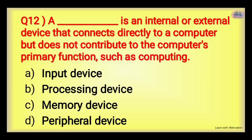Next: Dash is an internal or external device that connects directly to a computer but does not contribute to the computer's primary function such as computing. It can be internal or external but does not disturb the main parts of the computer. Options: Input Device, Processing Device, Memory Device, or Peripheral Device. The right answer is Peripheral Device — input, processing, and memory are all parts of a peripheral device. When we talk about entering data into a computer, that's input; extracting output is output; but together they are called peripheral.